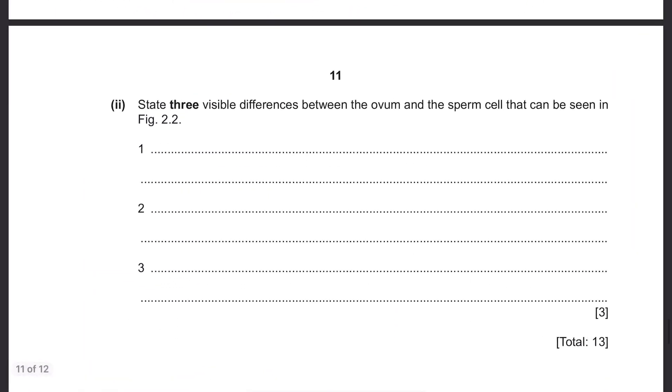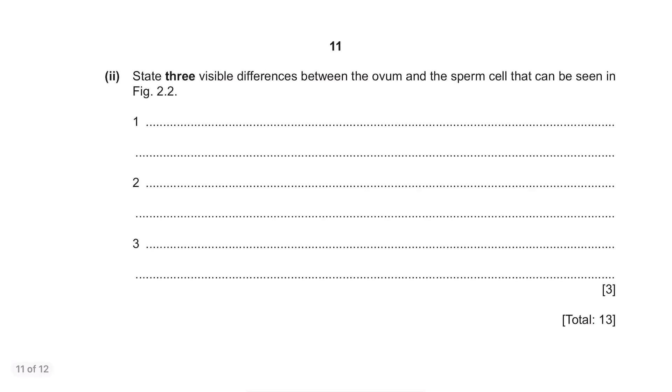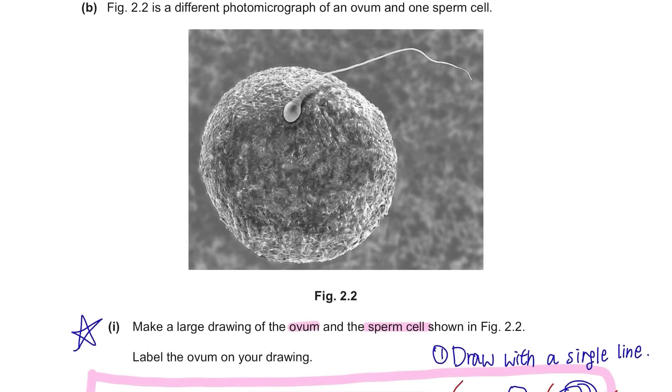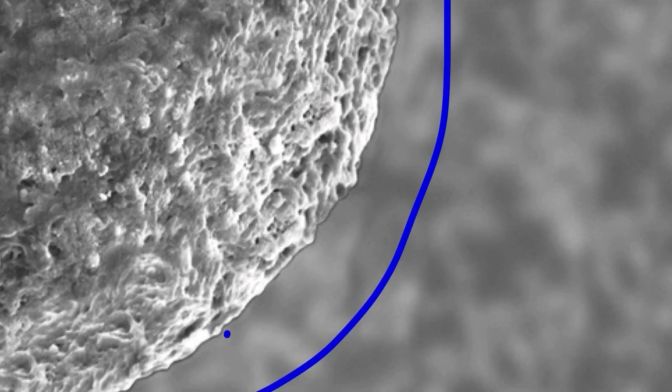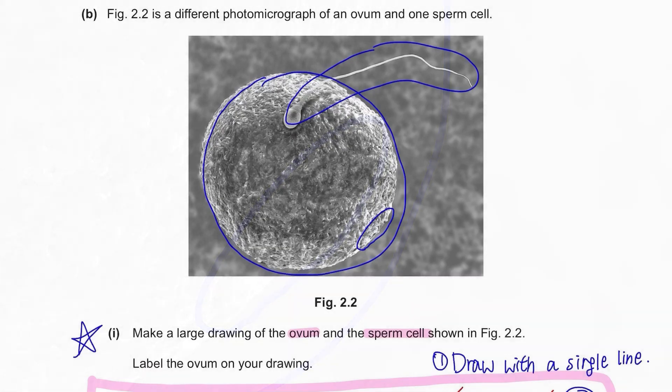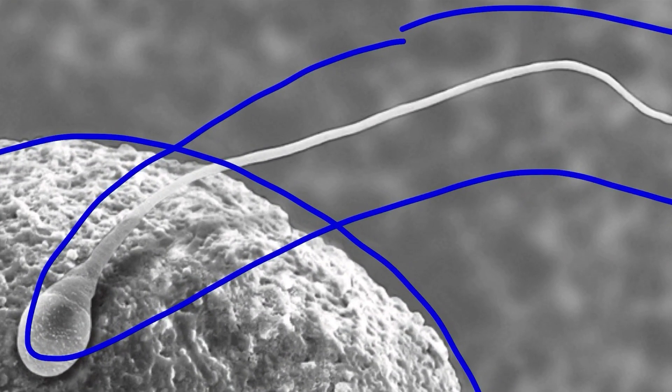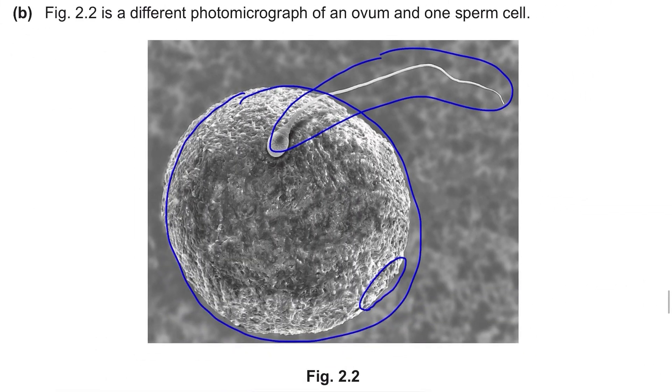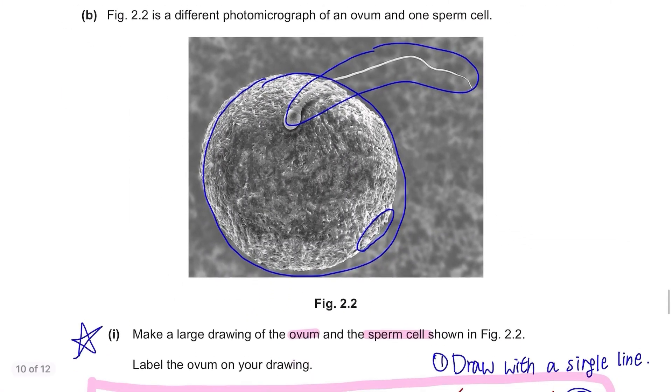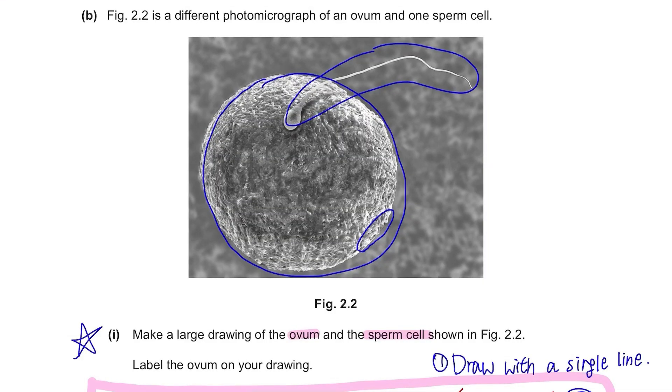State three visible differences between the ovum and the sperm cell that can be seen in figure 2.2. Alright, the most visible one is that the ovum is larger than the sperm. Then in terms of shape, ovum is round and sperm is long and thin. Also, if you observe carefully, you can see that ovum has rough surface but sperm is quite smooth. One extra point is that ovum has a uniform shape, it's a plain circle but sperm becomes wider at one end.